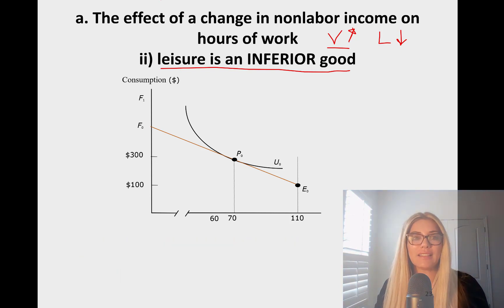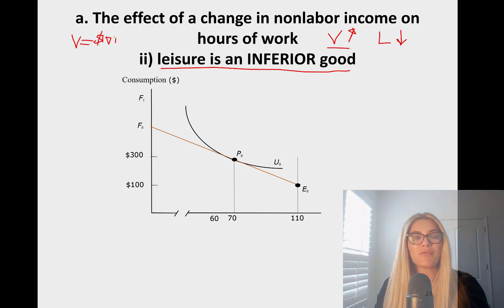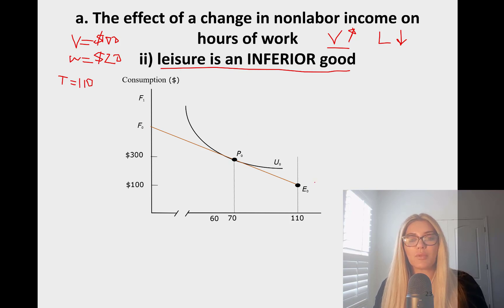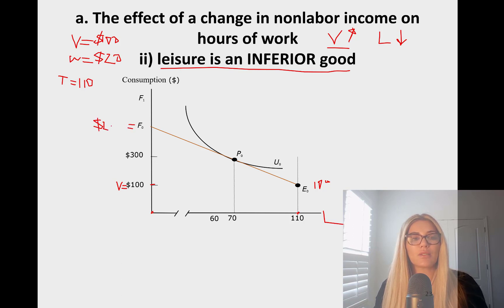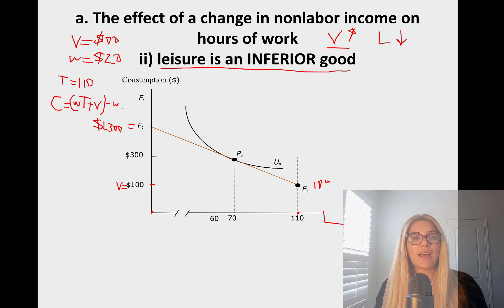Given the example we had previously, we had V = $100 initially. Our wage rate was $20, and our total time was 110. The initial endowment point is at 100 on the y-axis. You have leisure on the x-axis, maximum 110. This is your non-labor income. Initially, F0 is $2,300. We calculated this based on our consumption-leisure budget line formula: C = WT + V − WL, which gives $2,300.